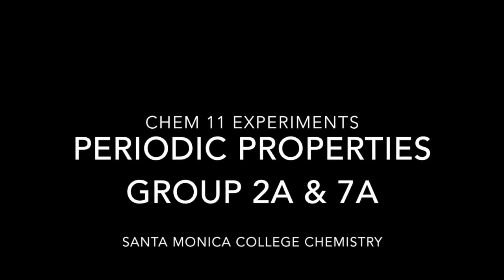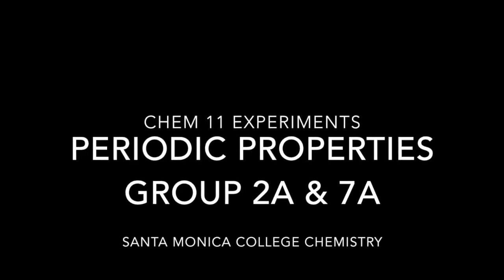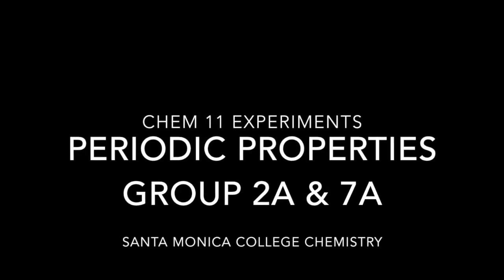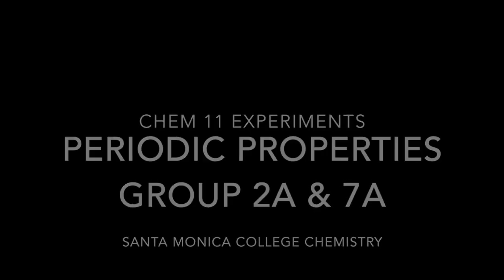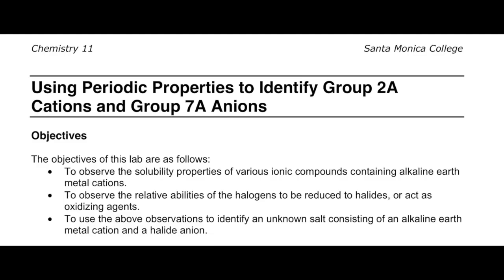Welcome to CHEM 11 experiment on the periodic properties of Group 2A and 7A. In this lab, we will be exploring the solubility properties of alkaline earth cations from Group 2A and observe the relative abilities of halogens to be reduced to halides and act as oxidizing agents.